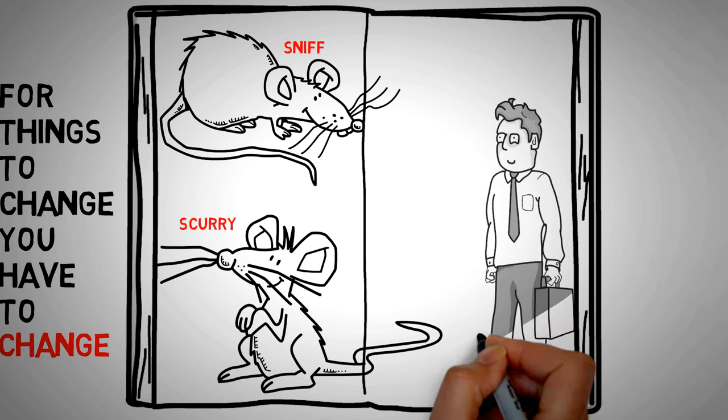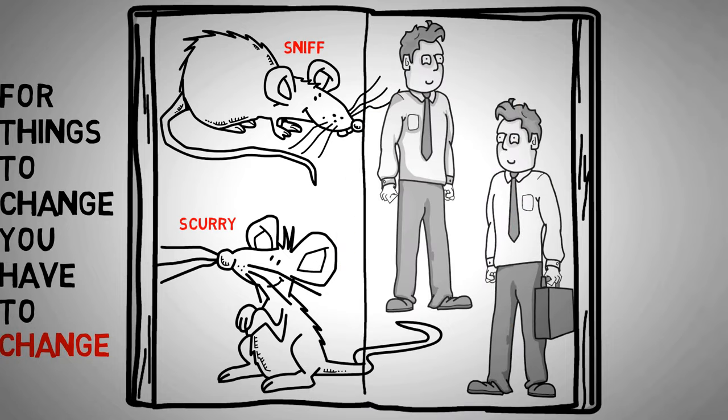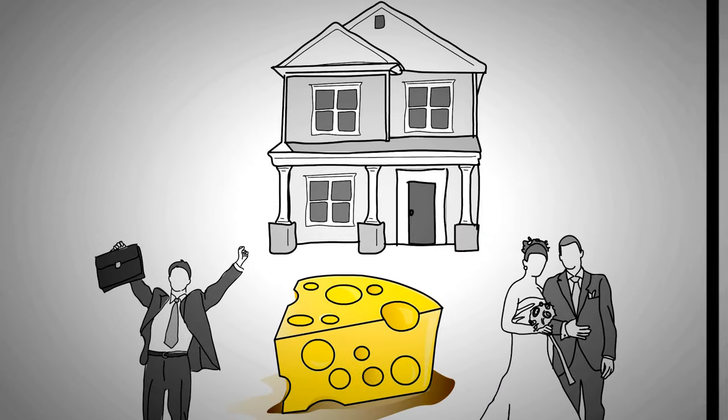Then there are two little people, really smart people who've done well for themselves so far. Hem likes to stay in safe, familiar territory, and Haw is slow to adapt to change but is open-minded. Sniff and Scurry go out and seek new cheese every day. Hem and Haw comfortably rely on their past knowledge and experience and assure themselves the cheese will be right where they left it.